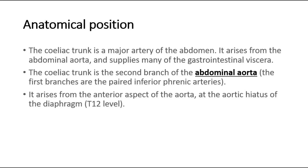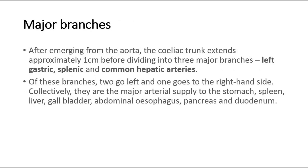The celiac trunk is the second branch of the abdominal aorta, where the first branches are the paired inferior phrenic arteries. It arises from the anterior aspect of the aorta at the aortic hiatus of the diaphragm, at the T12 level.